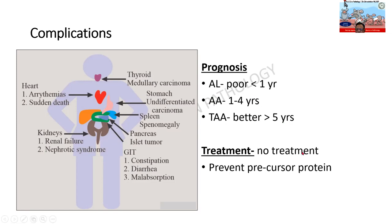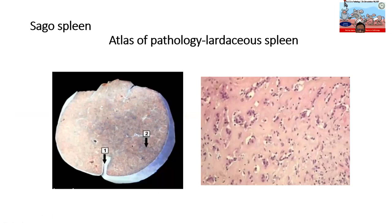There is no definite treatment for amyloid, but we can prevent the development of a precursor protein. This is the specimen of the spleen once again — always identify the spleen by its notch. Note the pallor — this is not the usual color of the spleen. This is the splenic follicle, and this is the sago spleen.